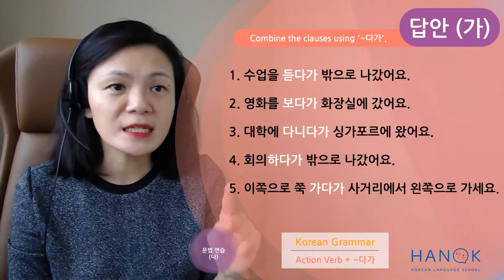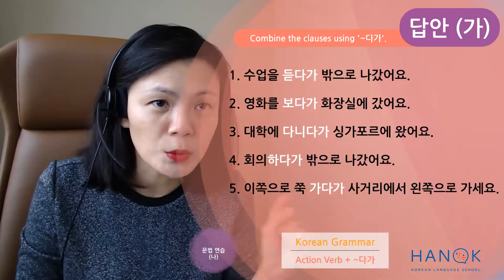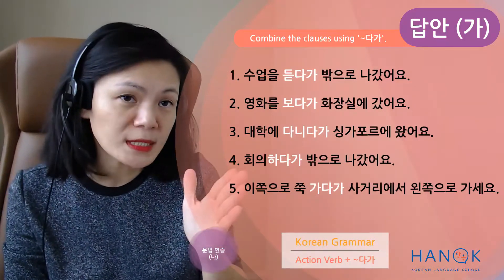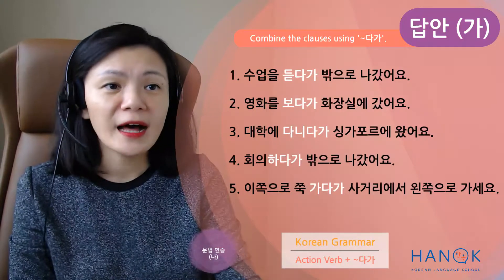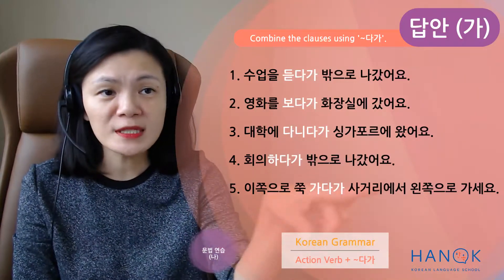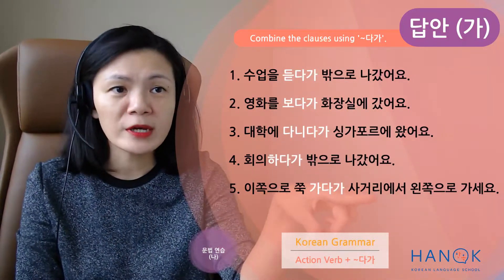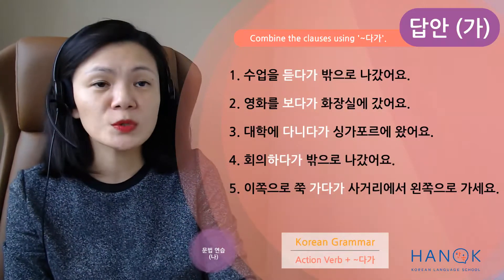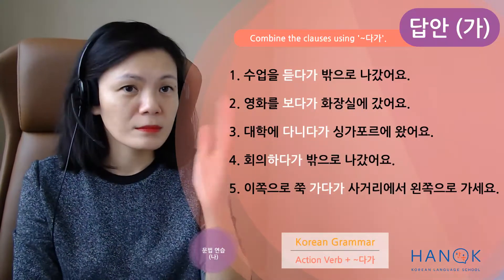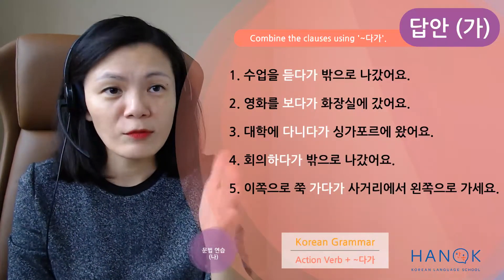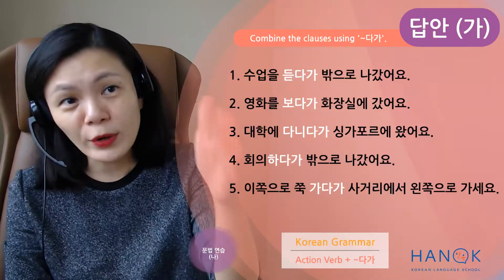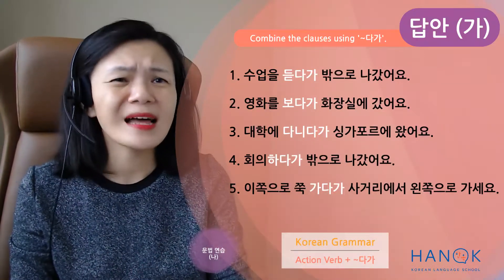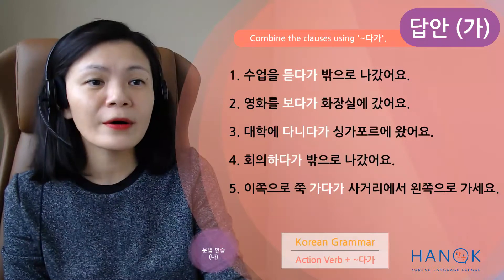이 쪽으로 쭉 가다가 — go straight towards this side, and then at the four-way junction, 왼쪽으로 가세요, go towards the left. So halfway — don't go right to the end, you turn. 이 쪽으로 쭉 가다가: halfway, interruption.